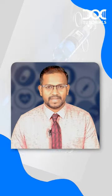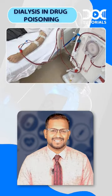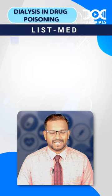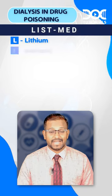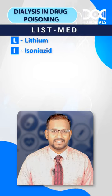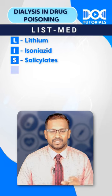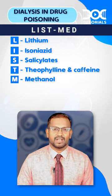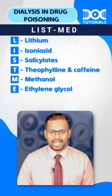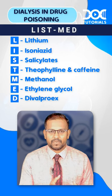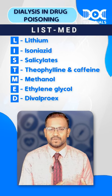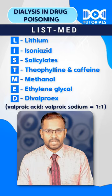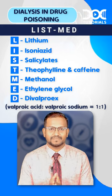The mnemonic is LIST MET. L stands for lithium, I for isoniazid, S for salicylates, T for theophylline, and caffeine. M stands for methanol, E for ethylene glycol, and T for divalproic — which is the combination of valproic acid and valproate sodium in a ratio of 1:1.